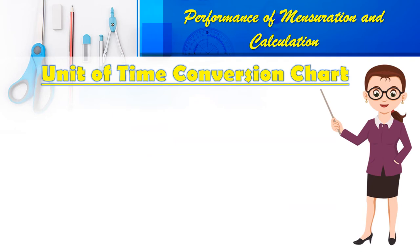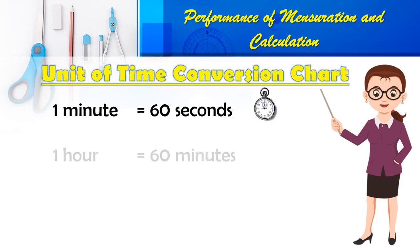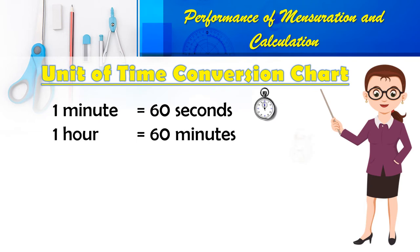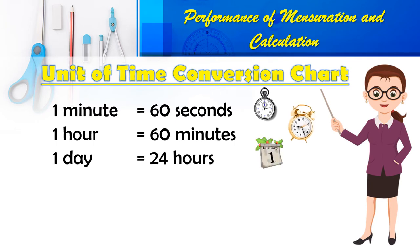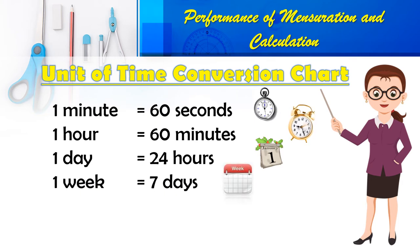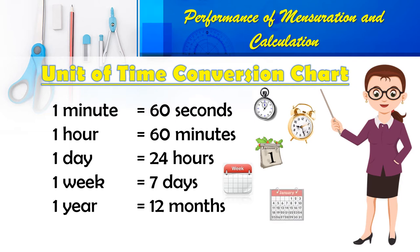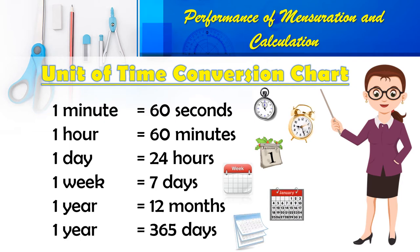Let us now begin with the unit of time conversion. These are the standard units of time. In one minute we have 60 seconds, in one hour we have 60 minutes, in one day we have 24 hours, in one week we have 7 days, and 12 months in a year.